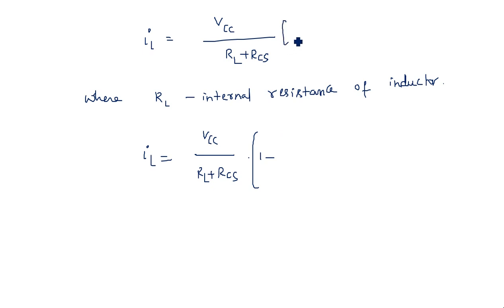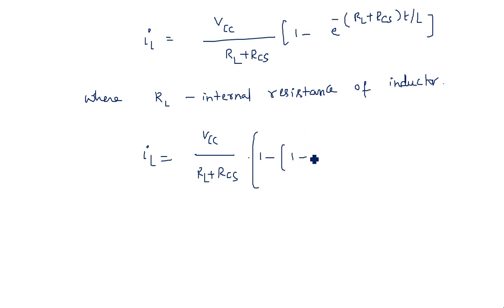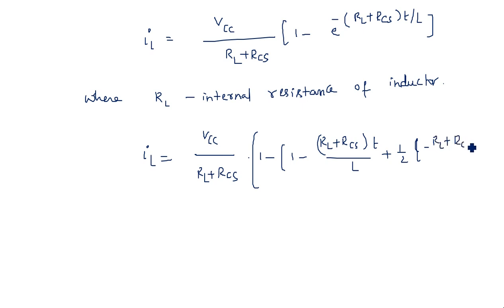Expanding the exponential term: (1 − e^(−(RL + RCS)·t/L)) expands as 1 − [1 − (RL + RCS)·t/L + (1/2)·((RL + RCS)·t/L)² − …].